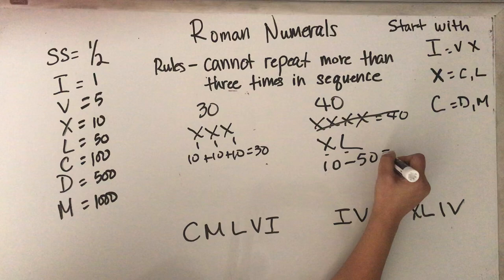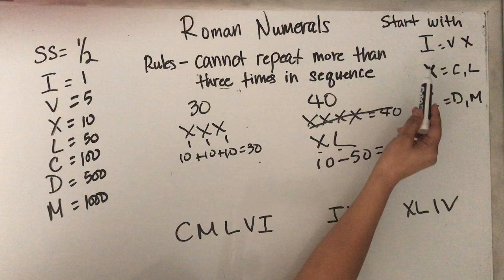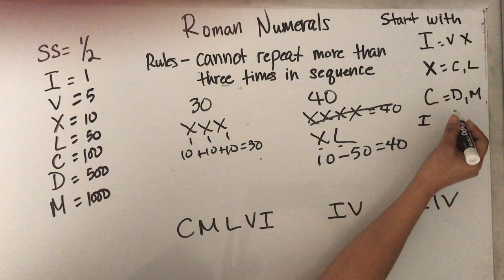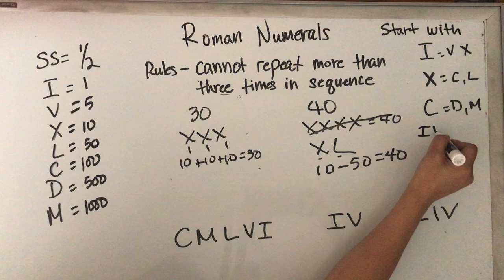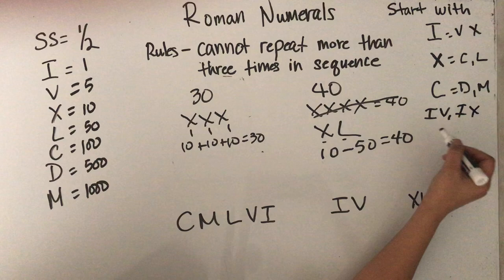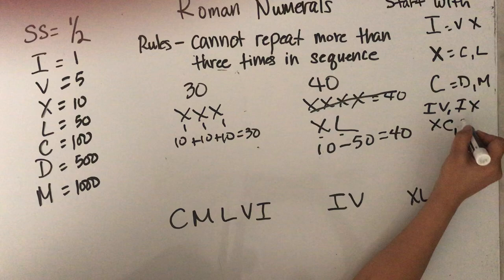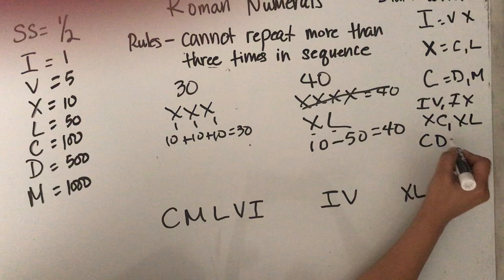When you have a low number, for example, if you start with an I, the next letter could only be a V or an X. If you started with an X, it can only be XC or XL. With C is CD or CM.